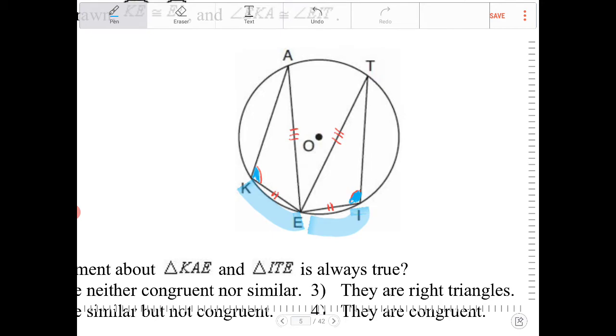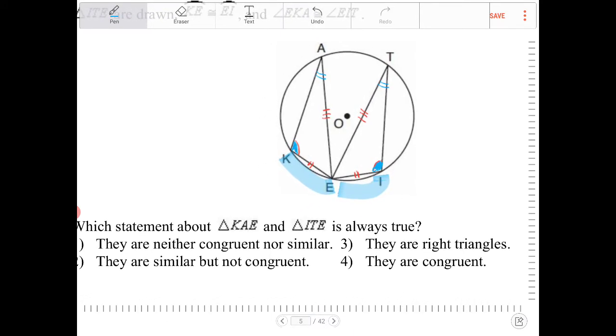And we can also make a very similar argument, and that is inscribed angles intercepting congruent arcs, those inscribed angles are also going to be congruent. So this angle over here is going to be congruent to angle T, that inscribed angle there, because angle A and angle T intercept congruent arcs. They intercept arc K-E and arc E-I, right?